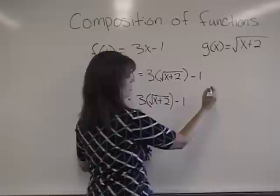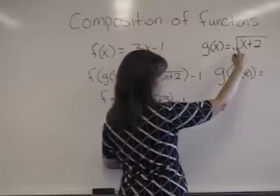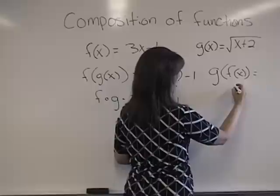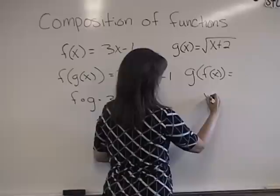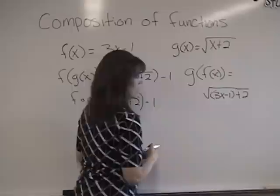Alright, so now let's look at it going the other way. Now let's compose g, the function g of x with f of x. So wherever there is an x in this function, we're going to substitute the function in. I'm going to just come down here because I'm running out of room. So I'm now going to put the square root of, wherever there is an x, I am putting 3x minus 1 in, plus 2.